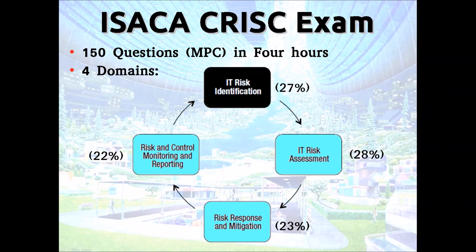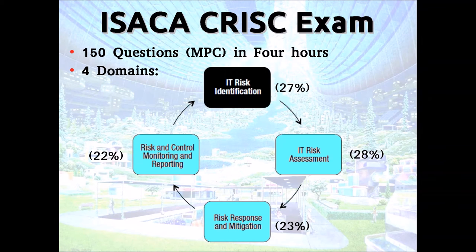The risk assessment asks: what's the impact if my guitar were to burn, and what's the likelihood? Risk response and mitigation asks: how could I prevent, detect, or respond to my guitar burning? Then I put in controls. Risk control monitoring — I have to keep looking: did the risks change, are there more fires, do I own more guitars, how are the sprinklers doing, how's my fire insurance? The only thing you can count on is change, so we continuously monitor the environment, our assets, and our controls.